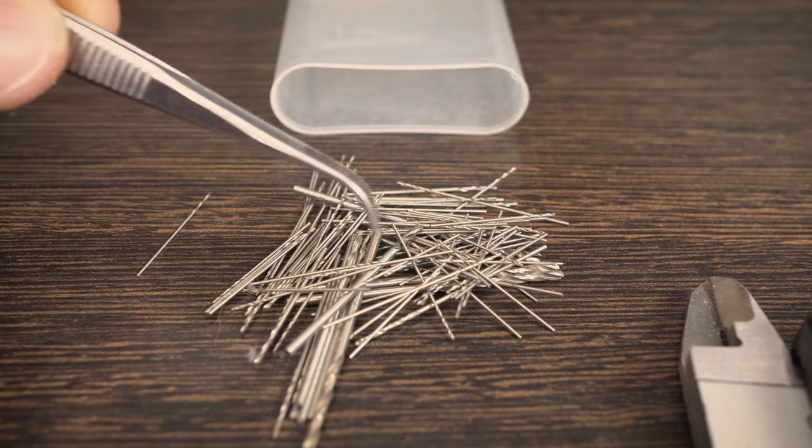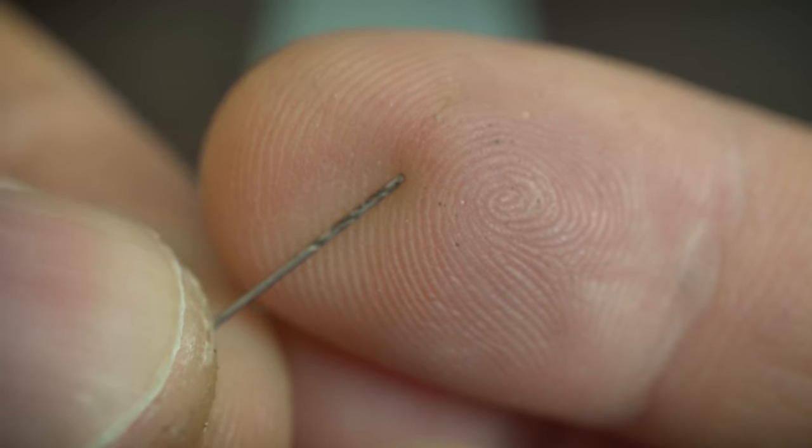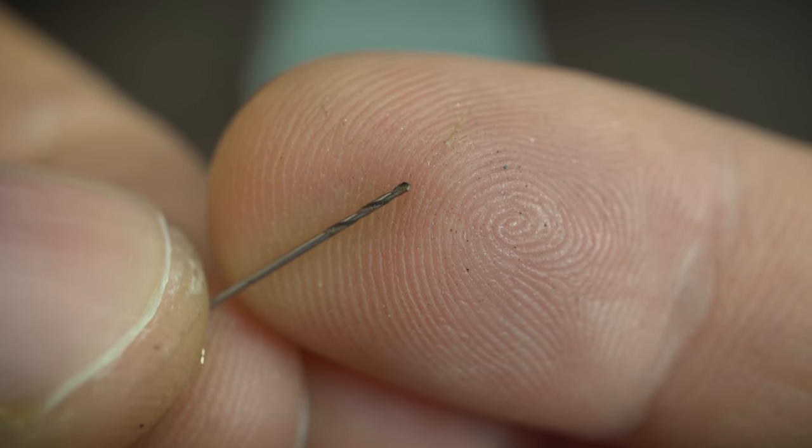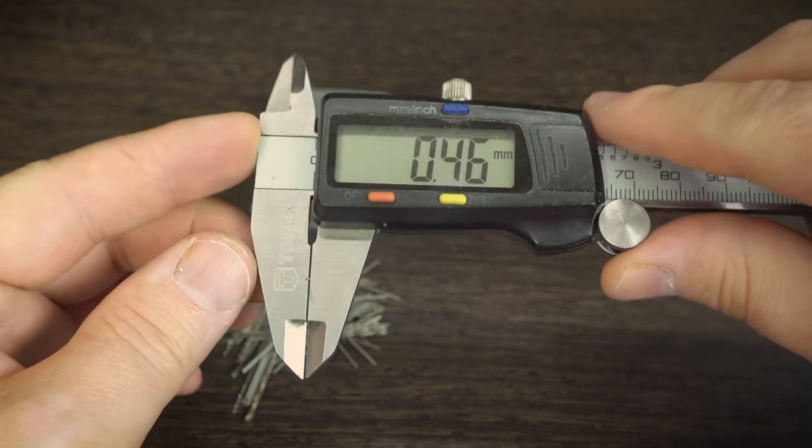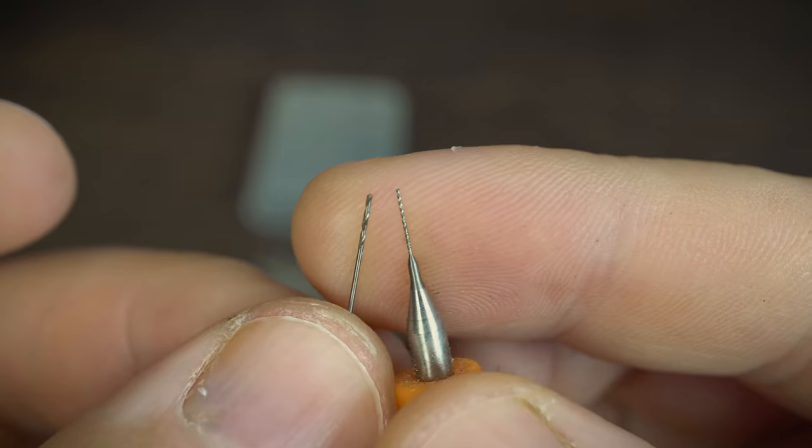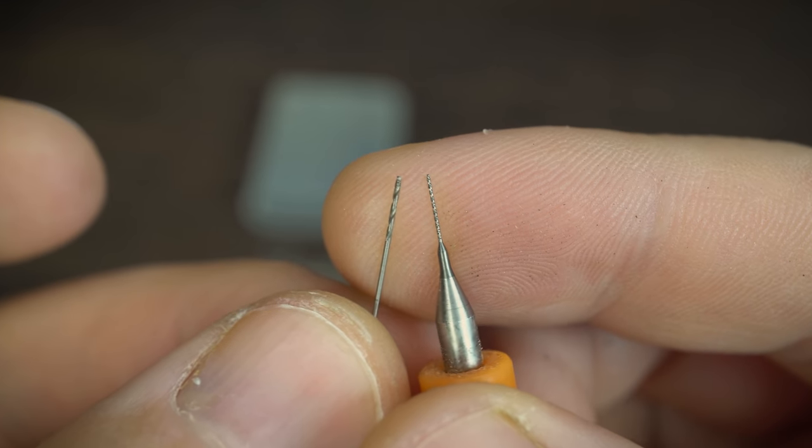One of my subscribers sent me these micro drills and by the way they're much sharper than the modern Chinese ones. The diameter of these drills is 0.5 millimeters. I also have drills with 0.3 millimeters and even 0.1 millimeters diameters but they are carbide and therefore very fragile, so we will test them next time.